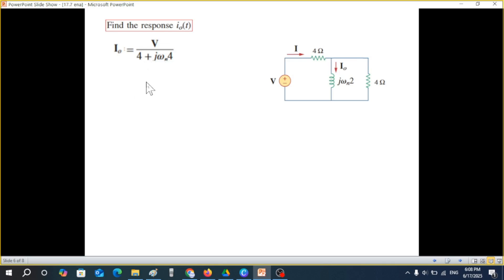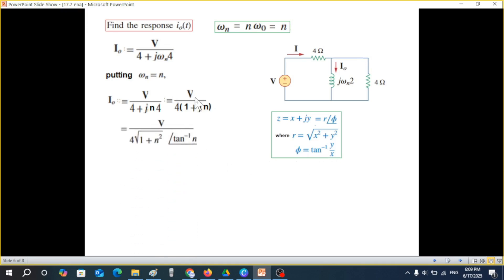This was our I₀, and this is ωₙ. Now we'll plug in the value of ωₙ that is equal to n. So I₀ will be V over 4j and 4 taking common 4(1 + jn). Now this is in complex form so we can replace it by magnitude and phase angle. I hope we remember this formula: x + jy can be written as magnitude and phase angle. The magnitude is the square root and phase angle is tan⁻¹(y/x), so we'll apply that here. V/4, from here we get this magnitude and this is the angle tan⁻¹(n/1).